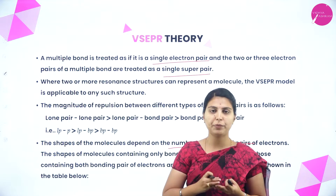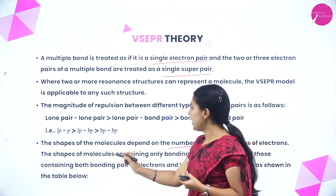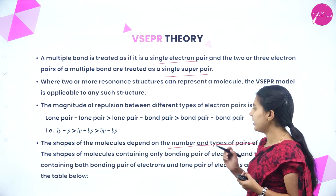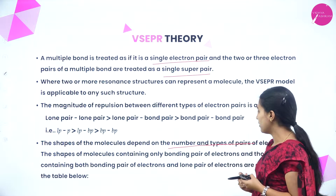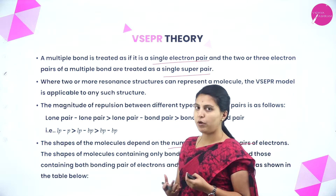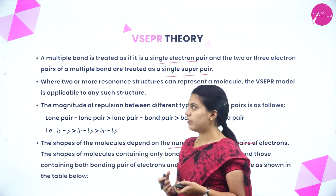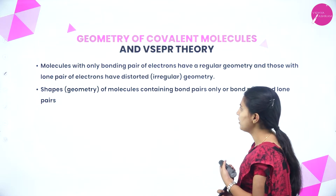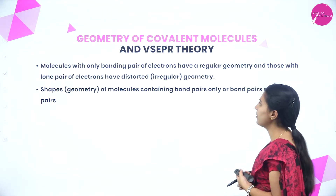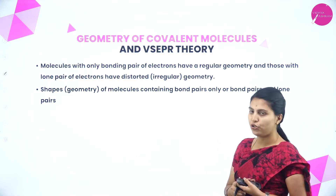The number of bond pairs or lone pairs makes a difference in the shape of a molecule. Molecules containing only bond pairs of electrons have regular geometry, whereas those containing lone pairs of electrons have distorted or irregular geometry.